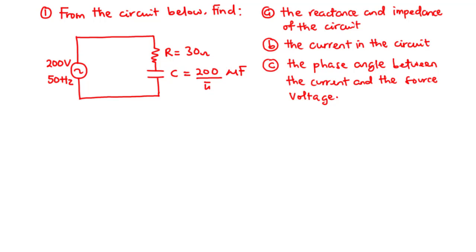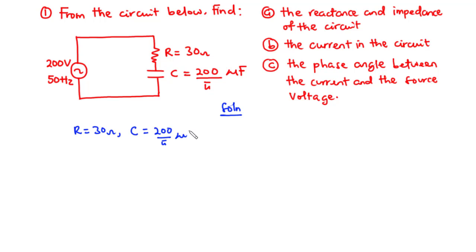Let's try an example. From the circuit, find: A) the reactance and impedance of the circuit, B) the current in the circuit, and C) the phase angle between the current and the source voltage. The circuit has a resistor of 30 ohms connected in series with a capacitor of 200/π microfarads, connected to a 200 volt, 50 Hz supply.